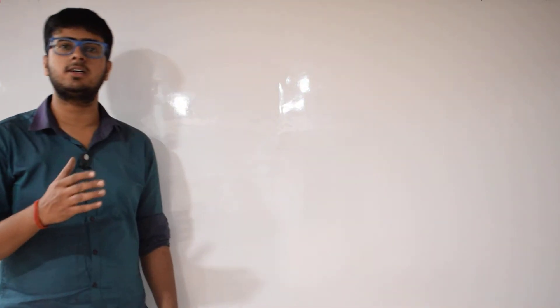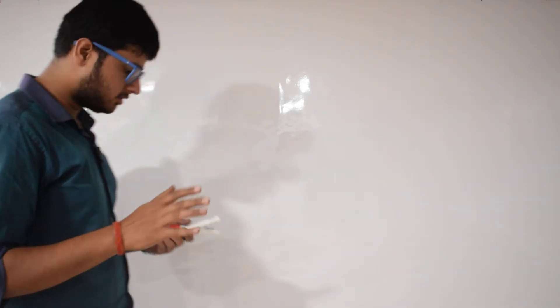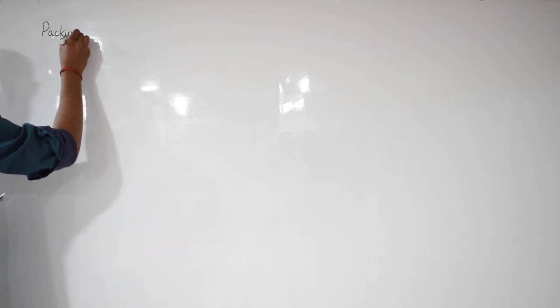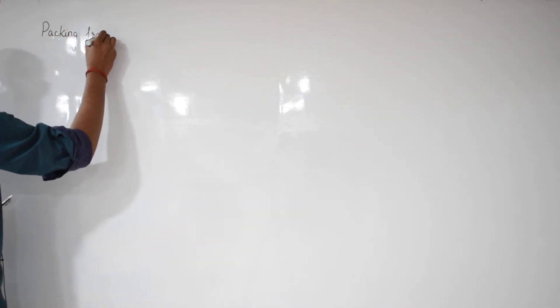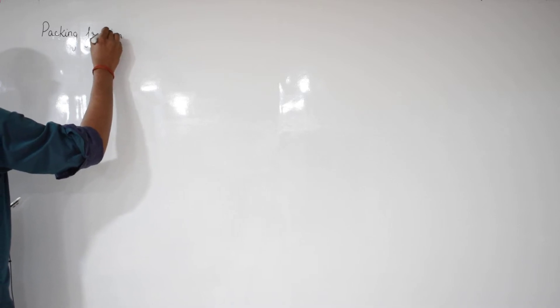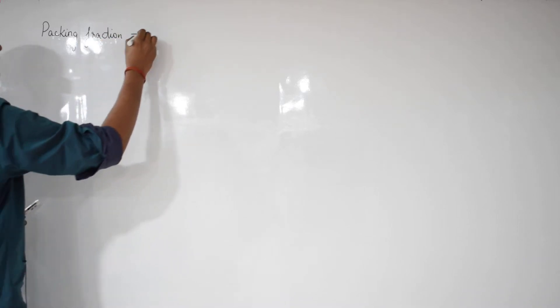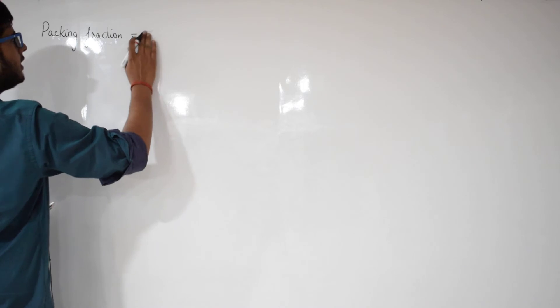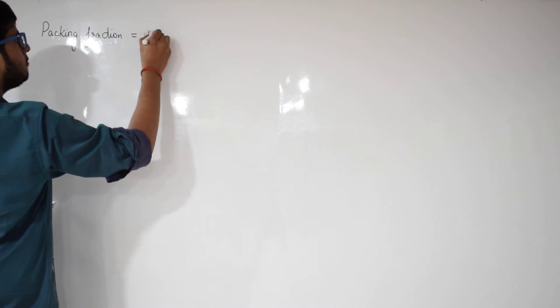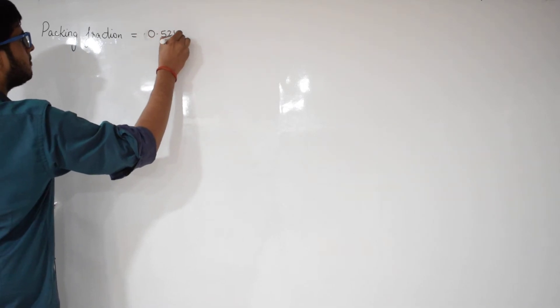Good morning class. Today we will further discuss the packing fraction of FCC and BCC arrangements. In the case of a simple cubic system, we saw that the packing fraction was 0.524.